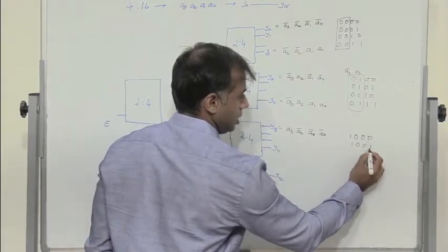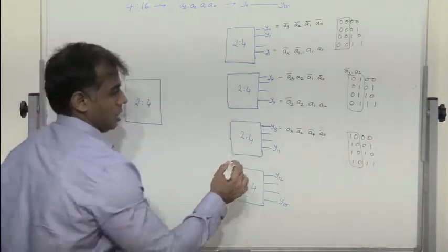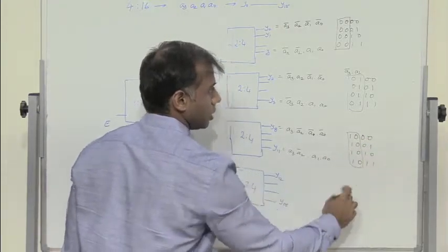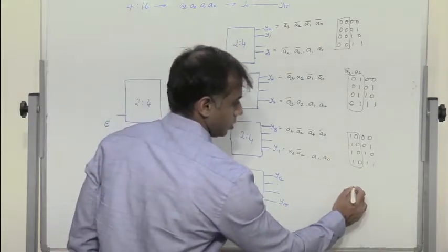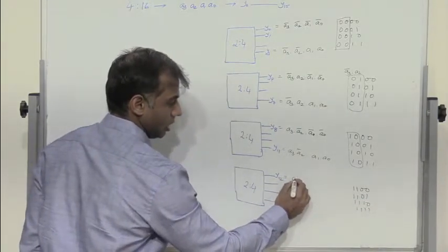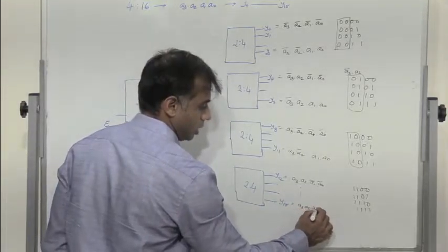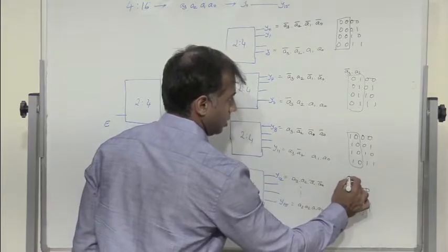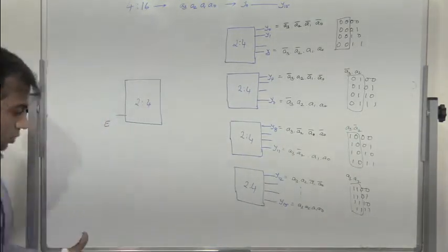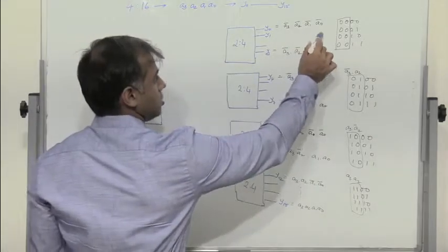For outputs Y8 through Y11, we observe A3 into A2 bar for all four cases. For outputs Y12 through Y15, the pattern is 1,1,0,0 through 1,1,1,1, so we have A3 into A2. In all four groups, A1 and A0 follow the same pattern: 0,0; 0,1; 1,0; 1,1.